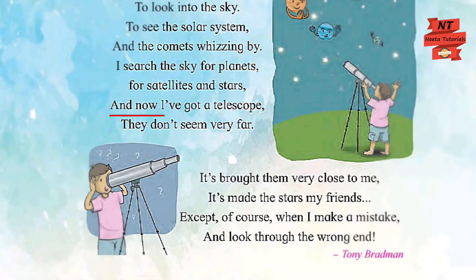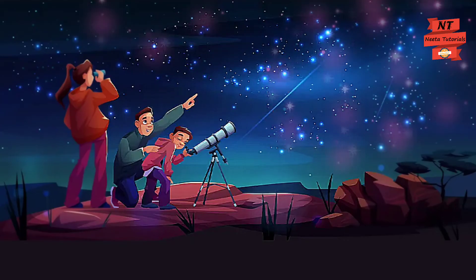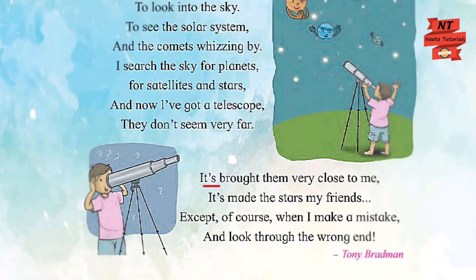Now, since the little boy has bought a telescope, he does not find the objects or shining bodies in the sky very far from him. 'It's brought them very close to me, it's made the stars my friends.' The telescope brings the faraway stars so close that they feel like his friends.